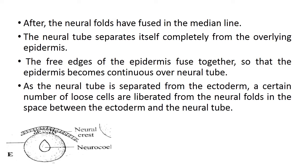After the neural folds have fused in the median line, the neural tube separates itself completely from the overlying epidermis. The free edges of the epidermis fuse together so that the epidermis becomes continuous over the neural tube. This fusing takes place at the posterior end. As the neural tube separates from the ectodermal cells, a certain number of loose cells are liberated from the neural fold region.